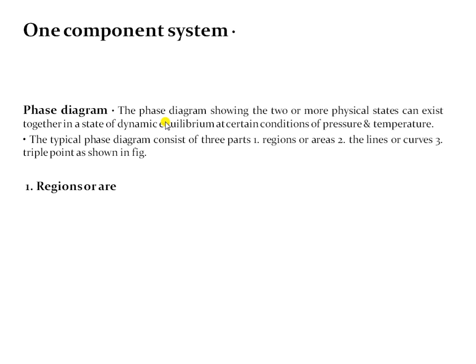What is a phase diagram? It is the diagram which shows two or more physical states that can exist together in a state of dynamic equilibrium at certain conditions of temperature and pressure. Simply, this phase diagram gives you the combination of variables along with the state of your system — at a particular temperature and pressure, your system is available in which form: solid, liquid or vapor phase, or two or three phases coexisting.